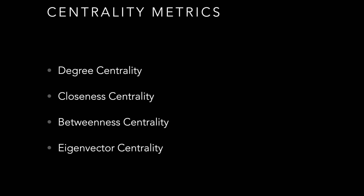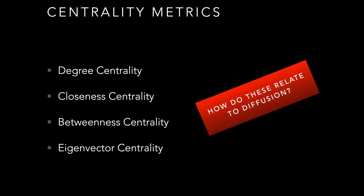We've already seen an answer to this question: centrality metrics. We've seen degree centrality, closeness, betweenness, and eigenvector centrality — all different ways to rank the importance of a node. The question becomes which one of these is the most important, and how do these centrality metrics relate to diffusion.